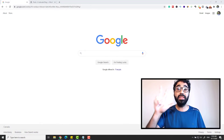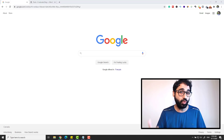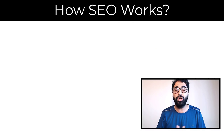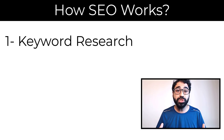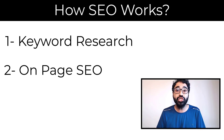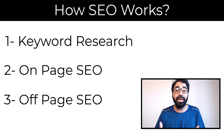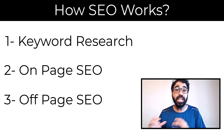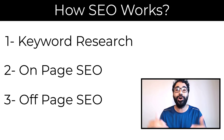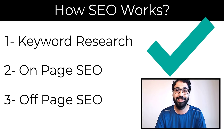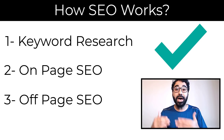Simply, there are three steps to optimize your website or web page to rank on Google. Number one is something called keyword research. Number two is called on-page optimization. Number three is off-page optimization. When you do these three steps, you will start getting free organic traffic from Google and search engines automatically to your website. Let's go through them one by one.